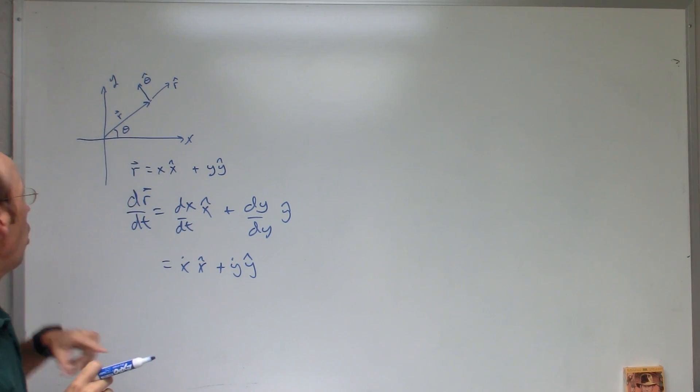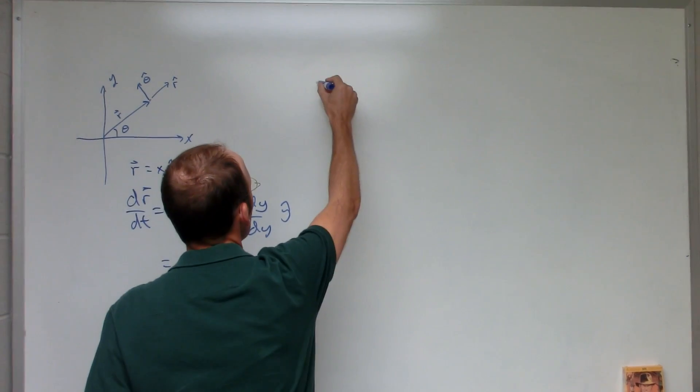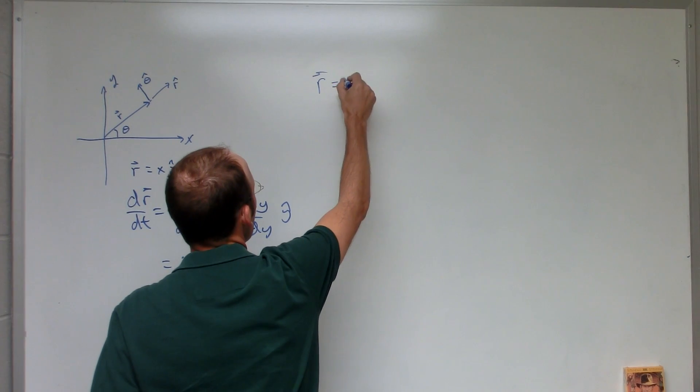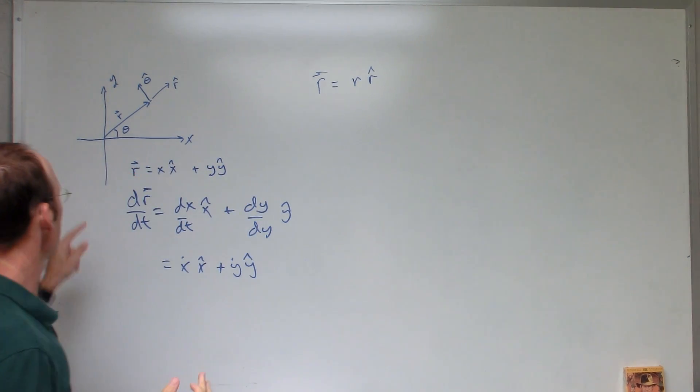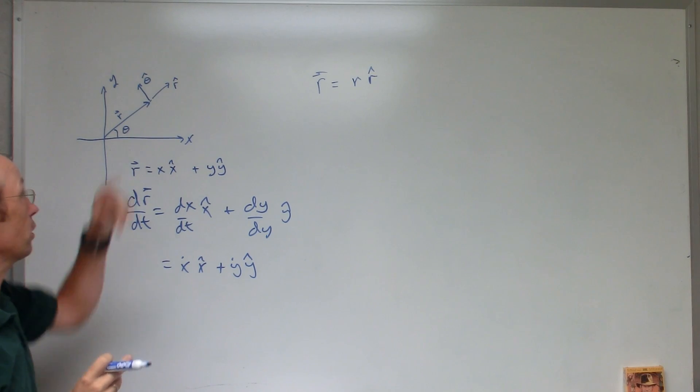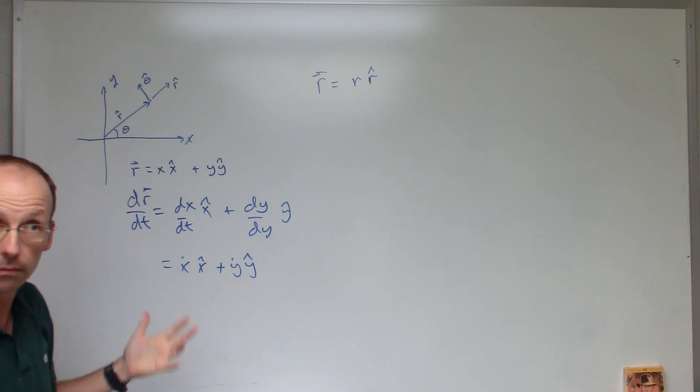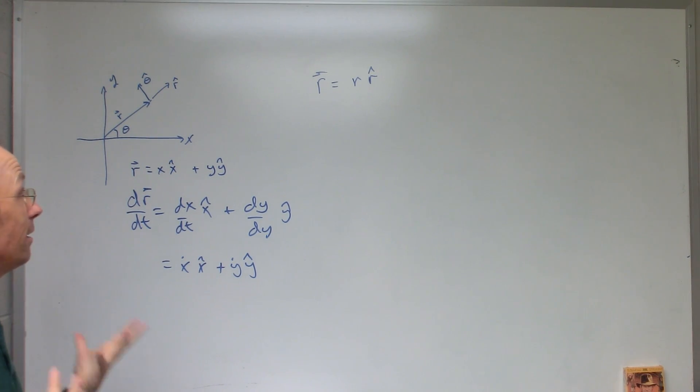So if I want to write r in terms of polar coordinates, it's not too bad. It's r r hat, that's it, right? Because that's my distance r in the direction of r hat. It seems like it should be easy to take the derivative, so I will do that.